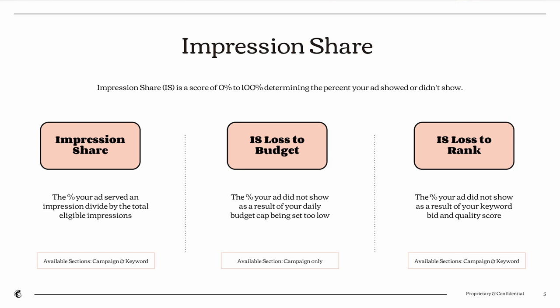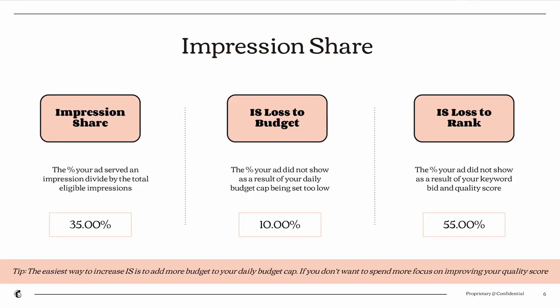You could also find that rank is the issue. If you're losing impression share to rank, that means either your keyword bids are too low or your quality score needs improvement. For example, on the campaign level you might have a 35% impression share. If 10% of that is lost due to budget, you'd increase your daily budget cap. If you're losing 55% due to rank, you'd look to increase keyword bids or improve your quality score.